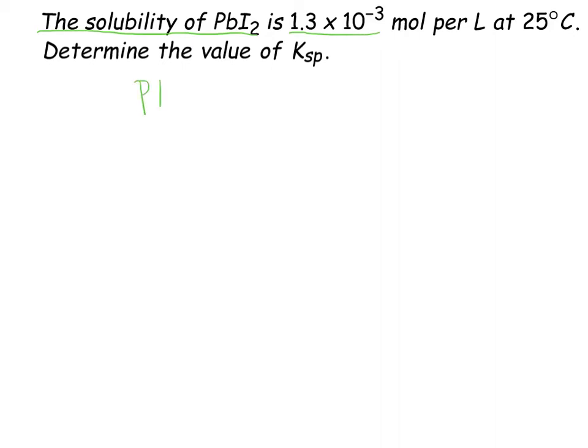The very first thing always is write a balanced equation. That's PbI2 solid is going to be dissolving to form Pb plus 2, aqueous, plus 2 I minus aqueous. And remember, the 2 goes in front of the I because this 2 is here to balance the charges, not because it's the identity of iodine. Remember, there's no such thing as diatomic molecules here. We only have ions. So, this 2 from the back will always go in front, not behind.